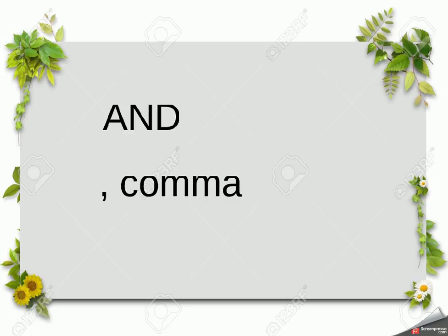A comma is used when we want to pause in a sentence — it's kind of like taking a breather in a long sentence. We also use it when we're making lists. We might use 'and' to say something is green and fast, but if we've got several objects then we can separate them with a comma. So 'the man was fast, tall and old' — you can see with that sentence I used a comma: 'the man was fast comma tall and old'.